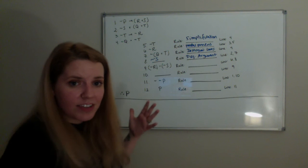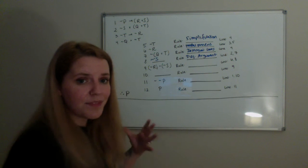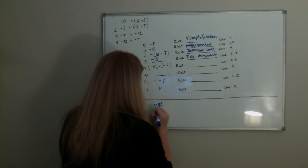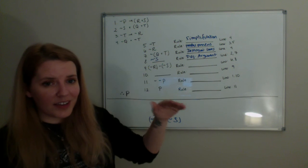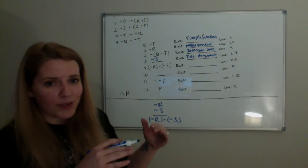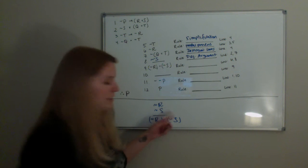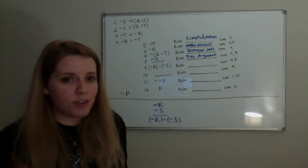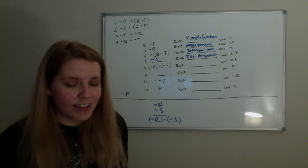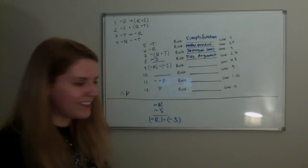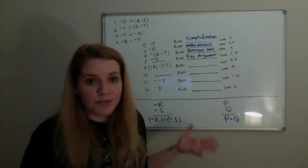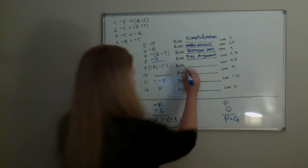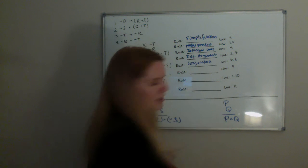Our next claim that we can deduce is not R and not S, and the lines we're citing are 6 and 8. Line 6 says not R, and line 8 says not S. We're saying that we can deduce not R and not S. Basically, we've got one claim and another claim, and we're deducing that we can assert both together. If not R is true and not S is true, then not R and not S is true. If it's true that my name is Rebecca and I live in North Carolina, then it's true that my name is Rebecca and I live in North Carolina. That rule is just conjunction — we're creating a conjunction claim between two things we already know are true.